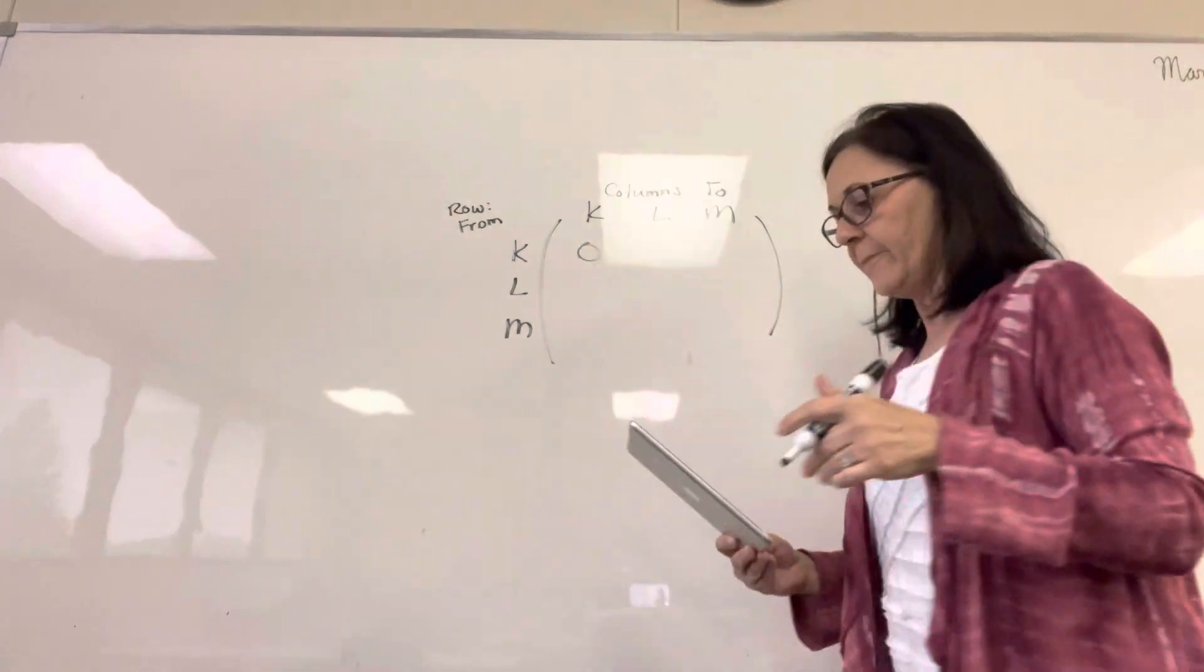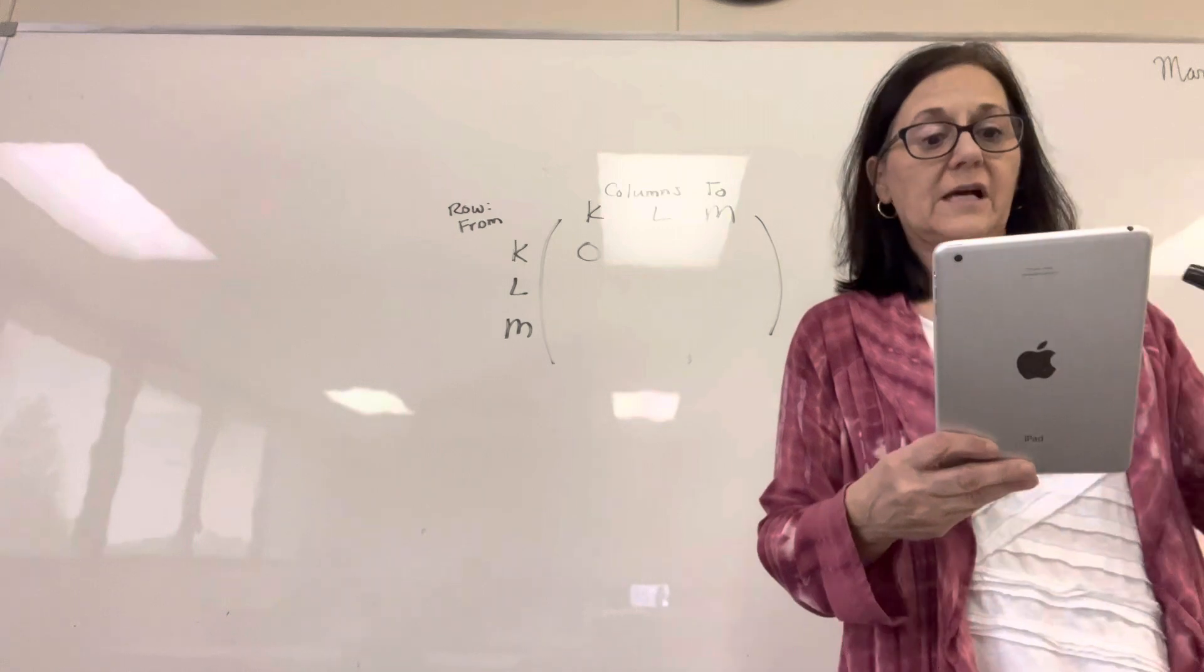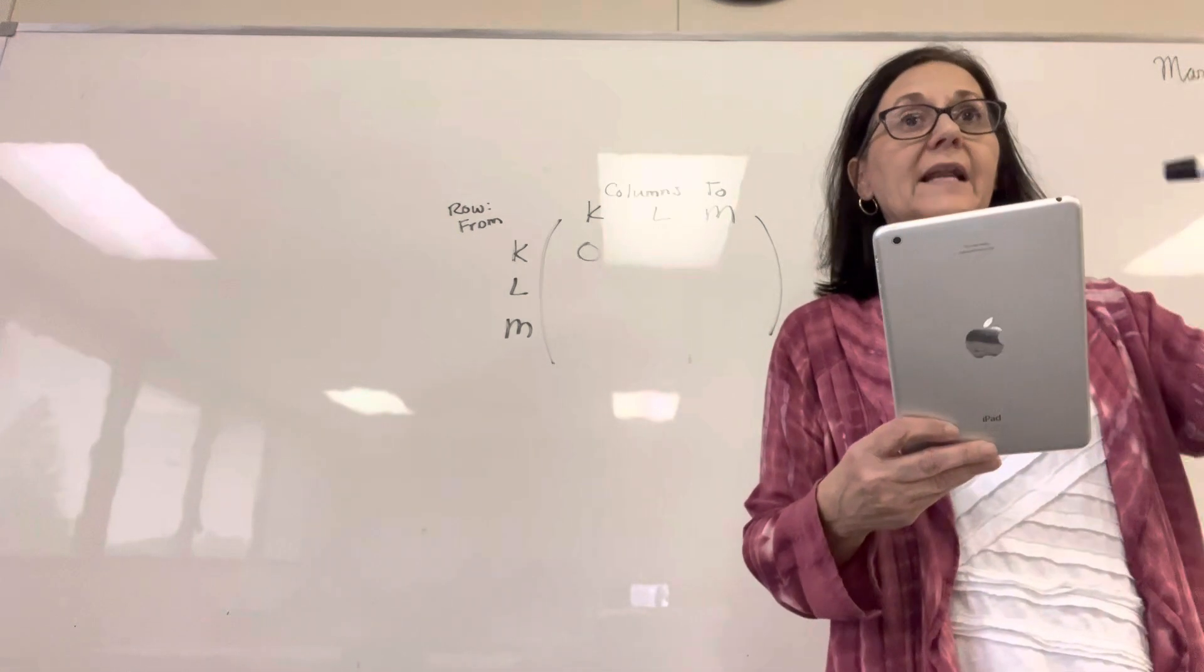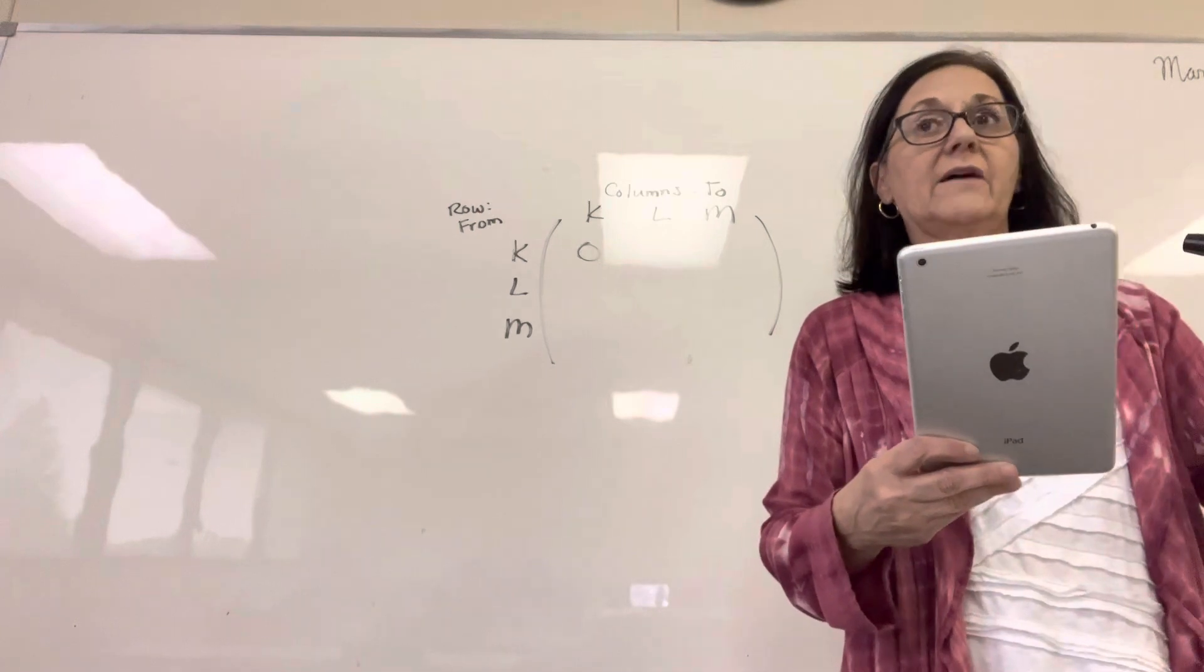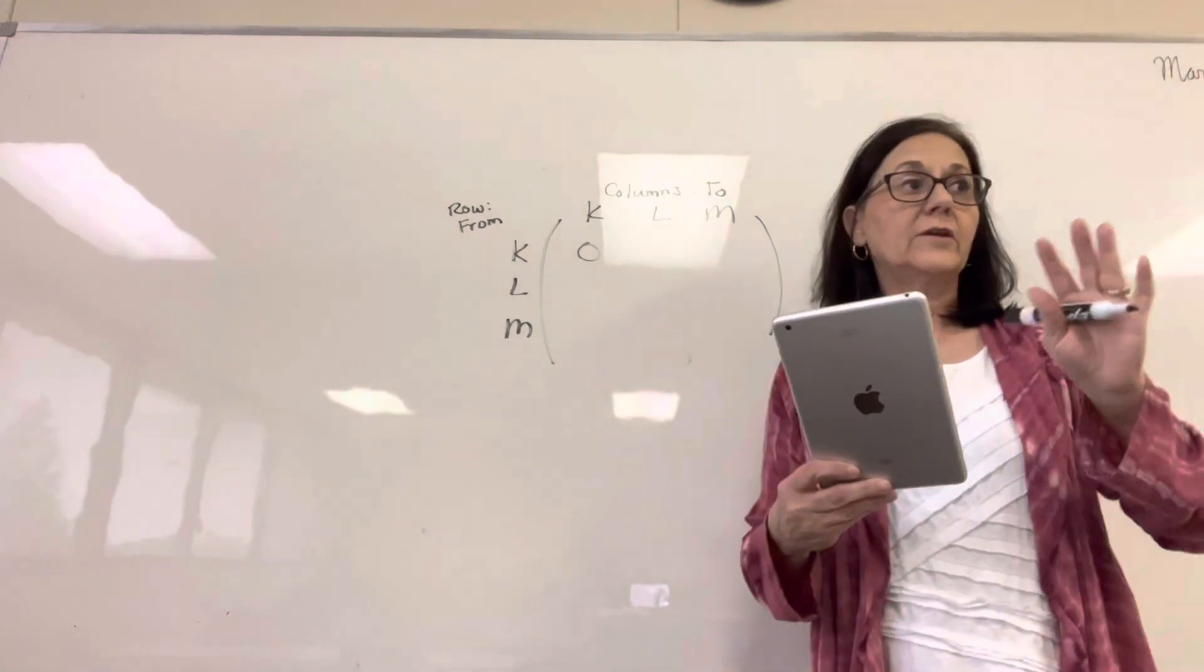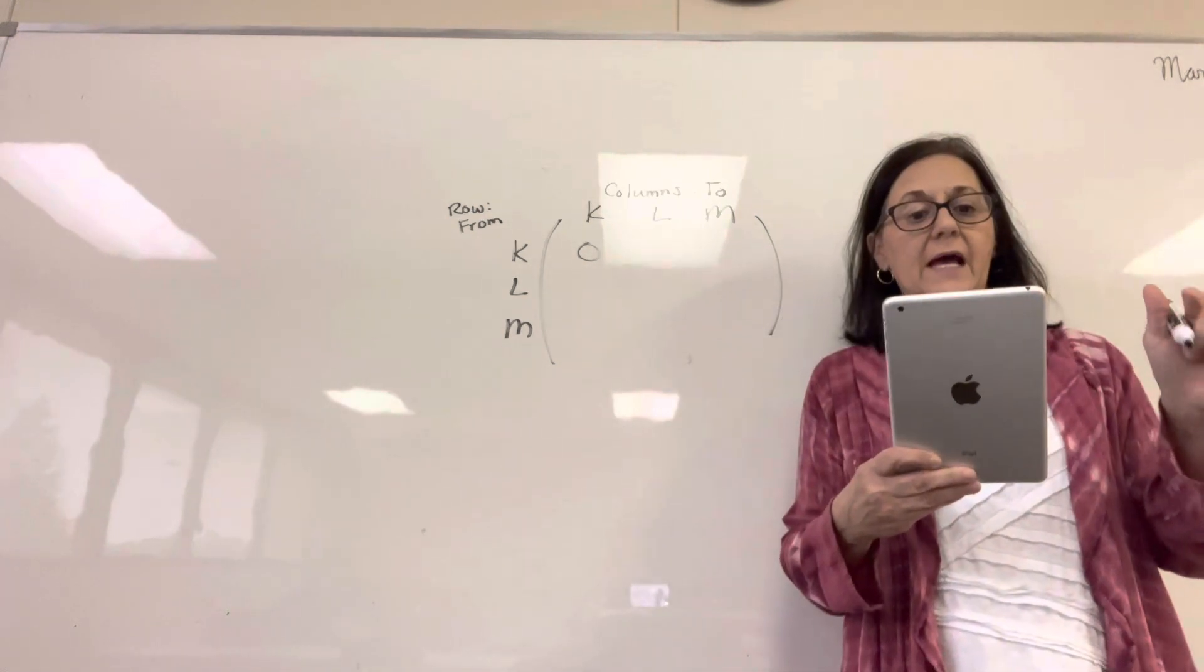Let's look at an example of one that goes from itself to itself, like M. Do you see M? M starts at itself and comes back around at itself. That would be one going to itself. How many arrows from K to L?